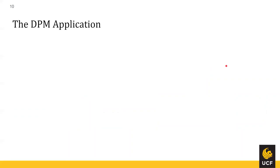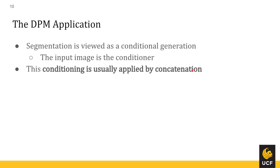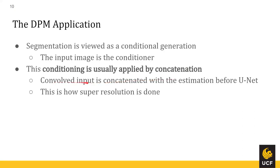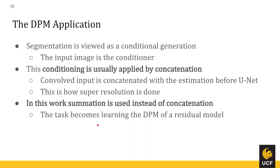Now we discuss the specifics of the implementation of the diffusion model in this paper. They view segmentation as a conditional generation task, where the input image is the conditioner — different from the text-to-image generation task where text is the conditioner. Conditioning can be applied by concatenation, as seen with super-resolution. But in this case, they use summation instead. We'll see the impact of this later. They also redefine the task as learning the DPM of a residual model. Now Ilkin will discuss the architecture and training.